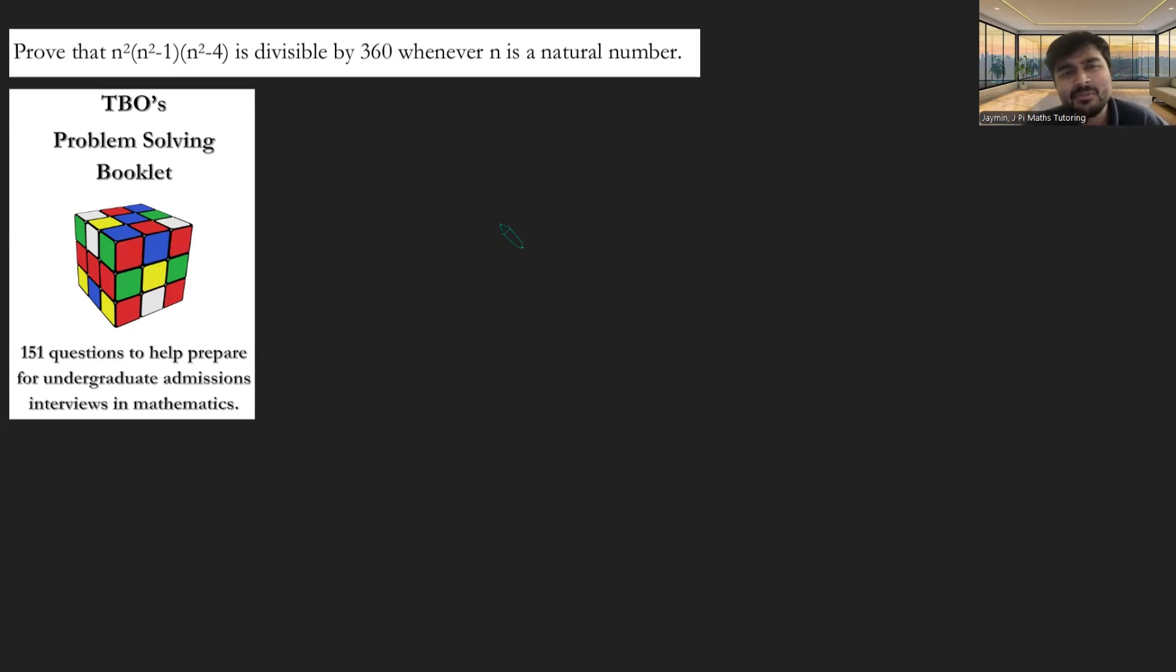Let's look at this one, and I think this one isn't too difficult for a maths student, but I can actually easily see this question being asked for someone who is looking to study or apply for a subject that's closely related to maths, maybe physics, economics, engineering, that sort of thing. We want to prove that n squared times n squared minus 1 times n squared minus 4 is divisible by 360 whenever n is a natural number.